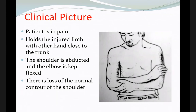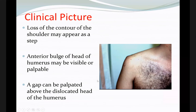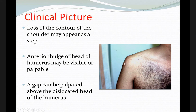Anterior dislocation is usually anterior-inferior, not pure anterior. With anterior dislocation, you most likely will get a Bankart lesion, which is an injury to the labral cartilage in the glenoid. Clinically, the patient presents in severe pain, usually holding the injured limb with the other hand close to the trunk, with the shoulder abducted and elbow kept in flexion. There is loss of the normal shoulder contour, and you may feel an anterior bulge.